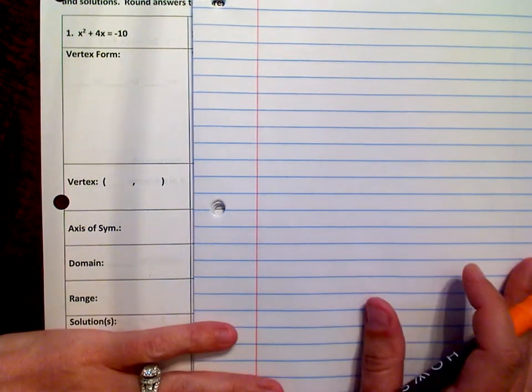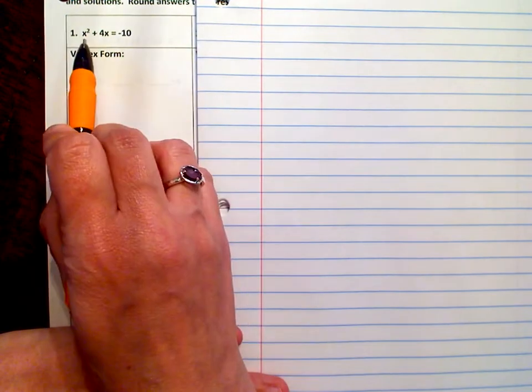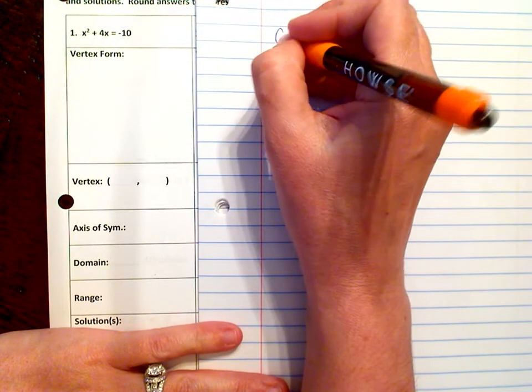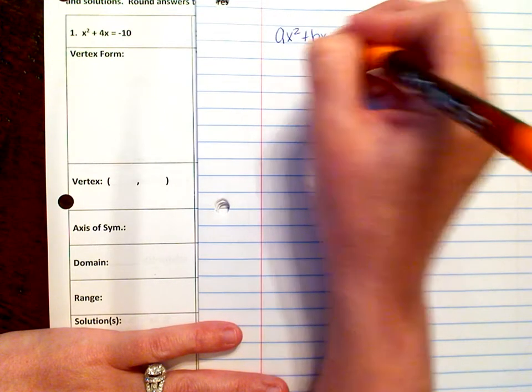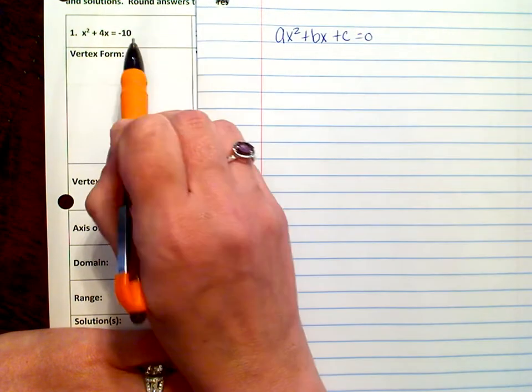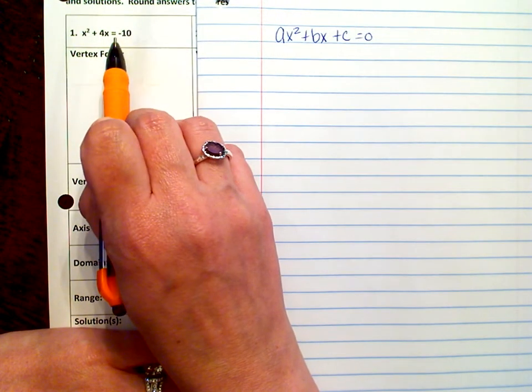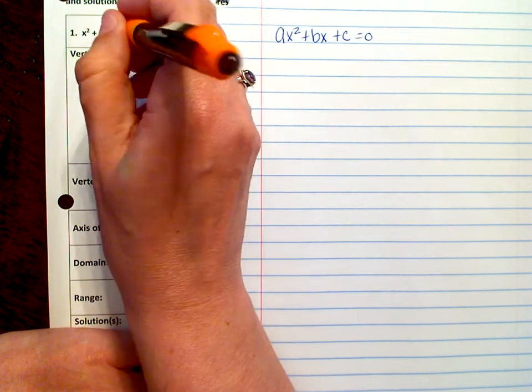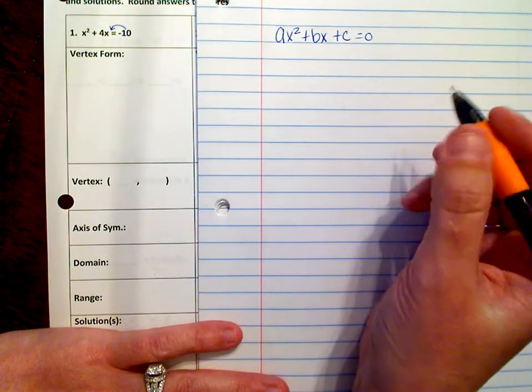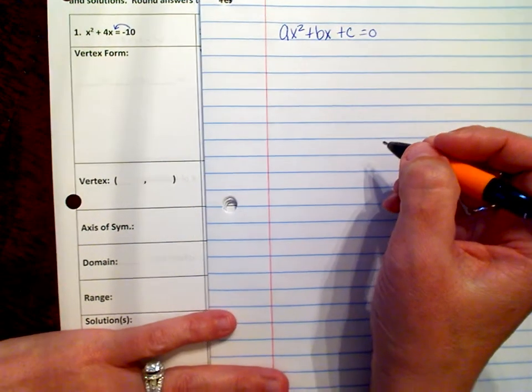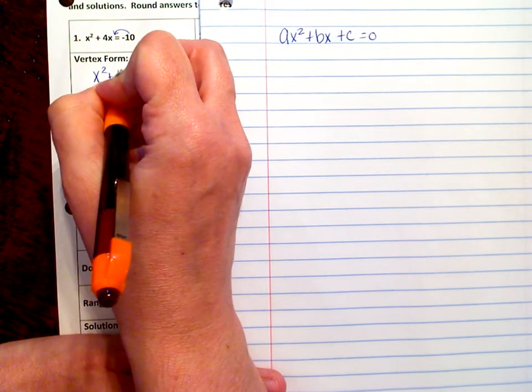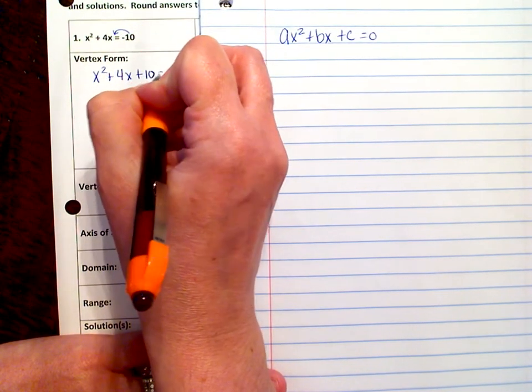Okay, number one. The first thing we need to do is put our equation in standard form. And remember, standard form is ax squared plus bx plus c equals zero. And right now, this negative ten is on the wrong side of the equal sign. So we need to move it over, and remember when it goes across the equal sign, you have to change the sign. So we're going to have x squared plus 4x plus ten equals zero.